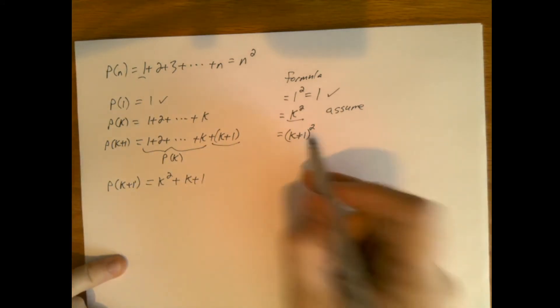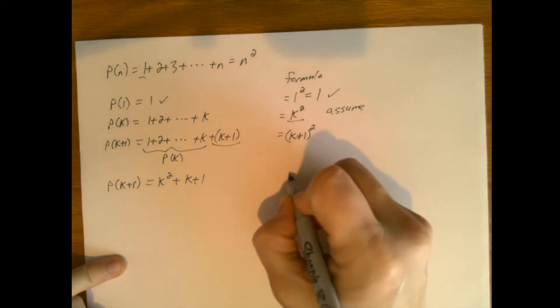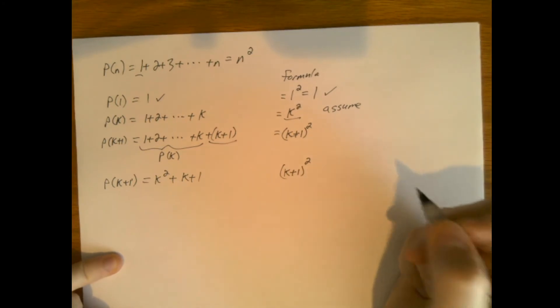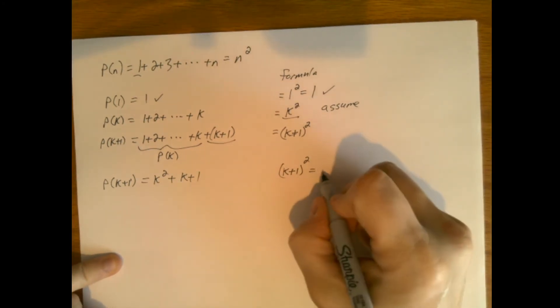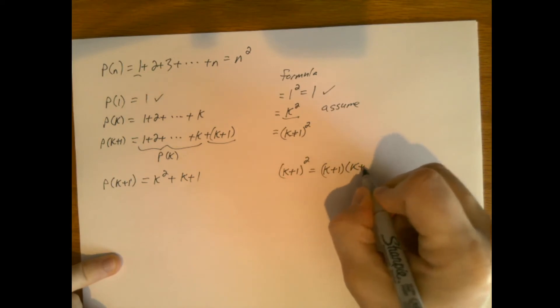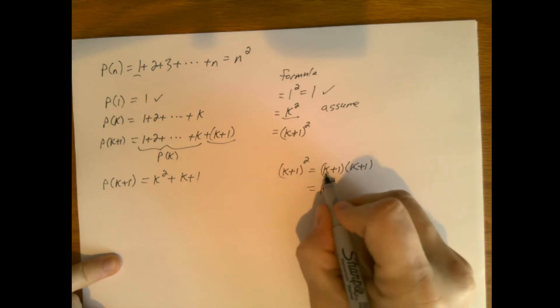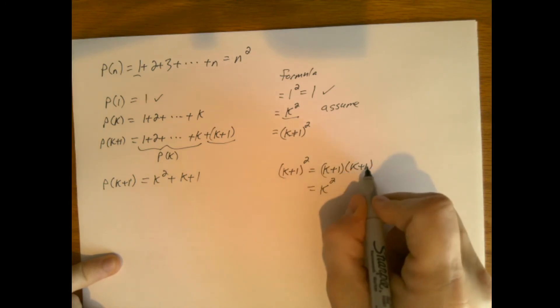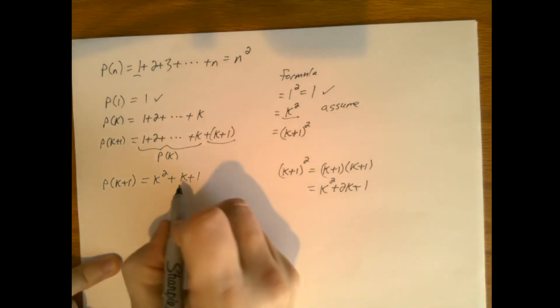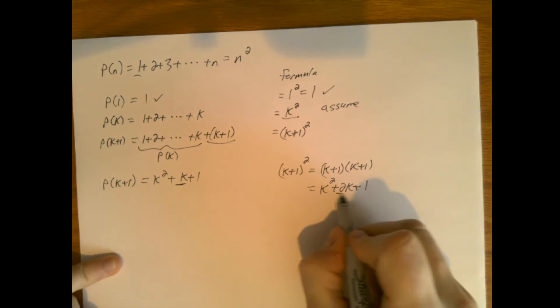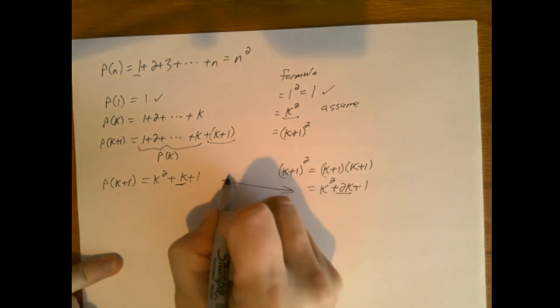And now if we just use the formula directly, this is supposed to be equal to this, k plus 1 squared, which is equal to k plus 1 times k plus 1. And that's equal to k times k is k squared. That's looking good. k times 1 is 1k plus 1k is 2k plus 1. Here we have a single k, here we have 2k. So they're different.